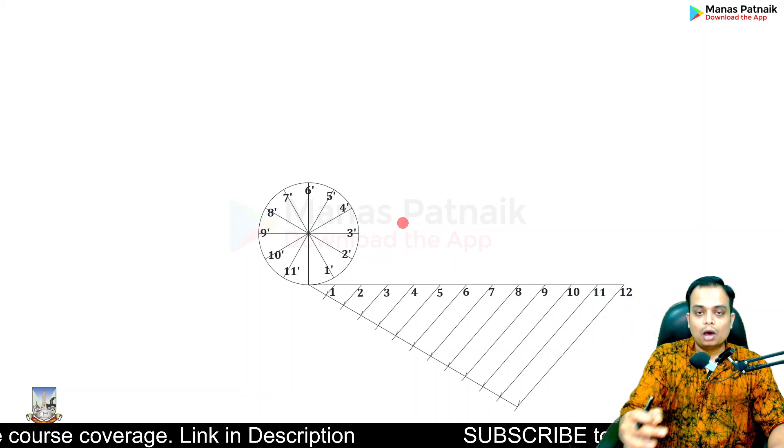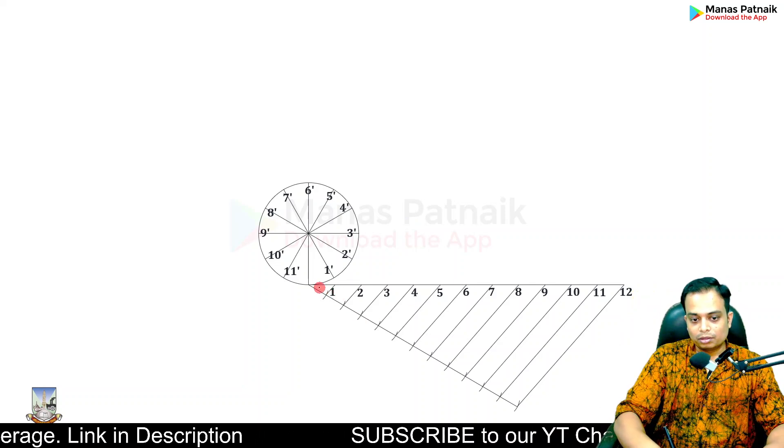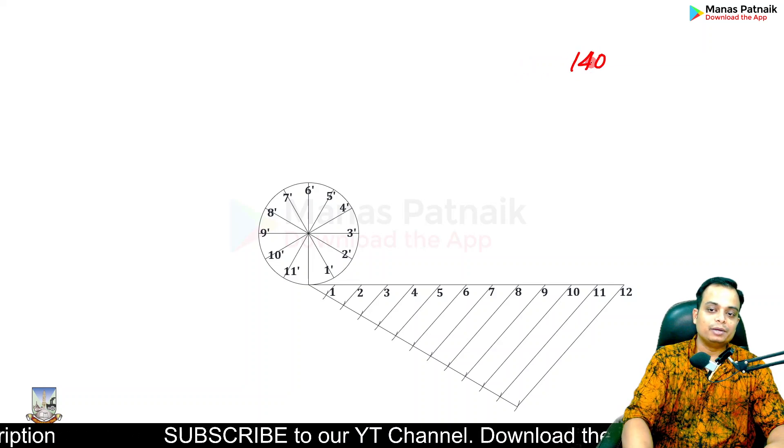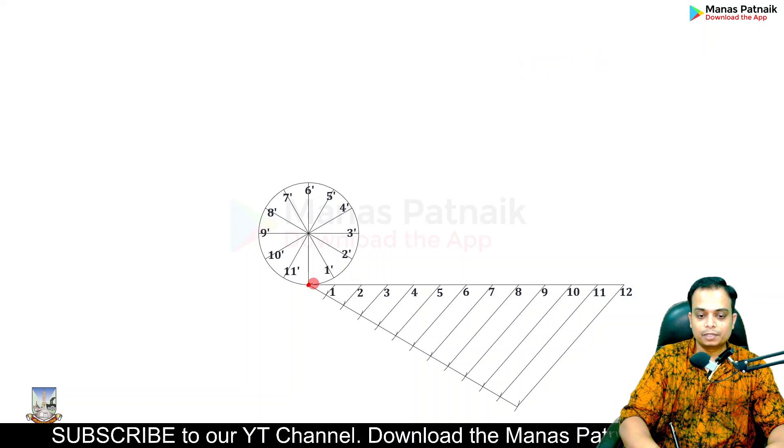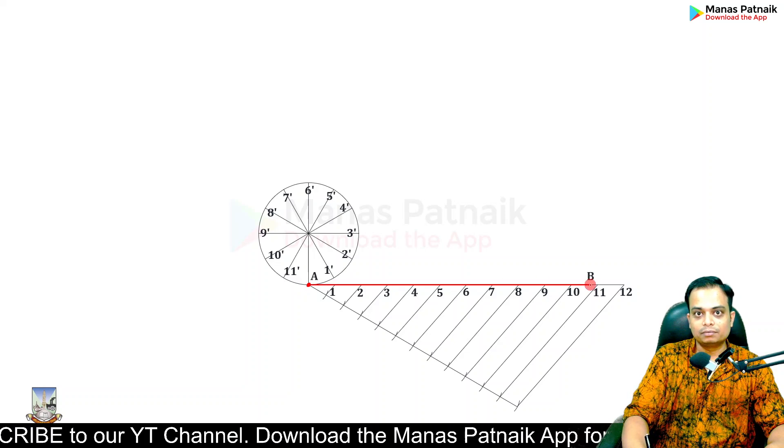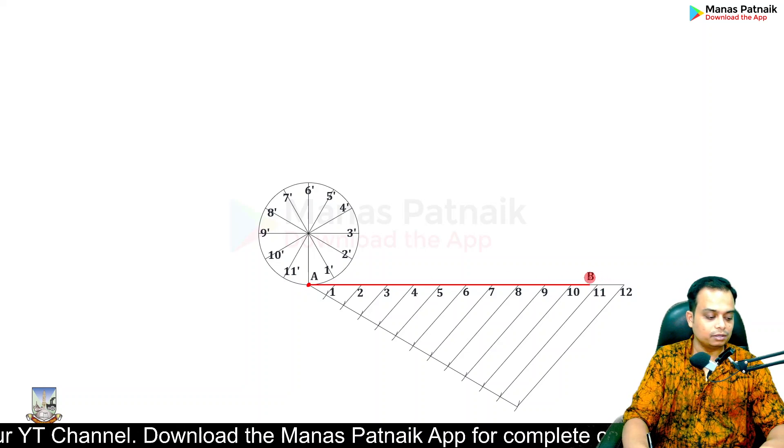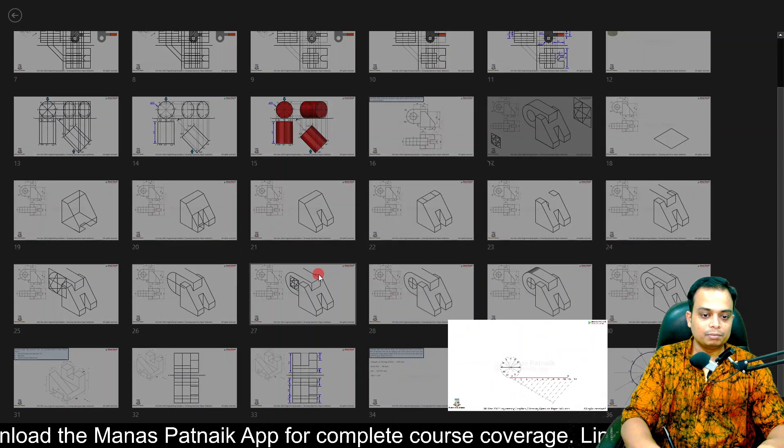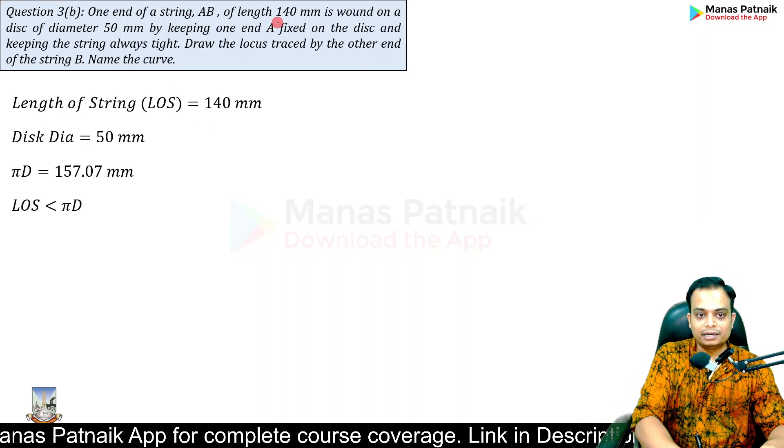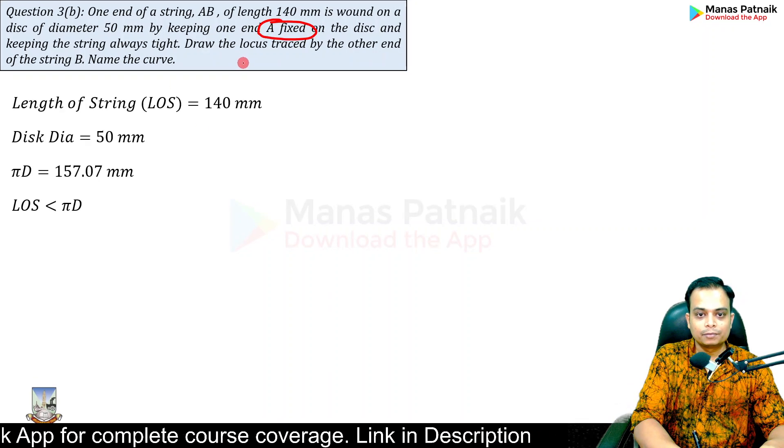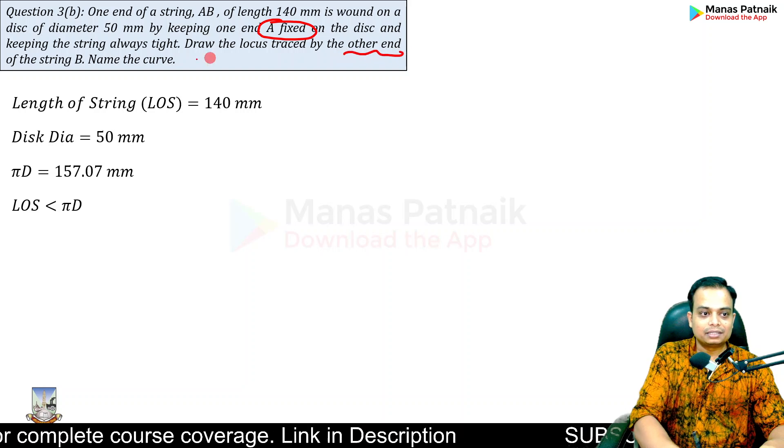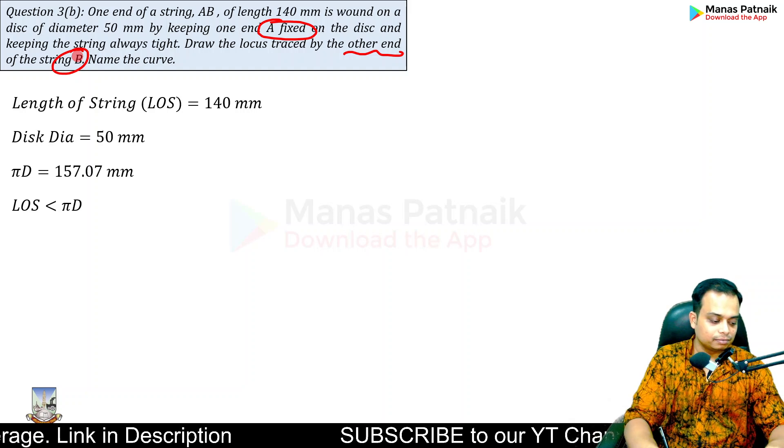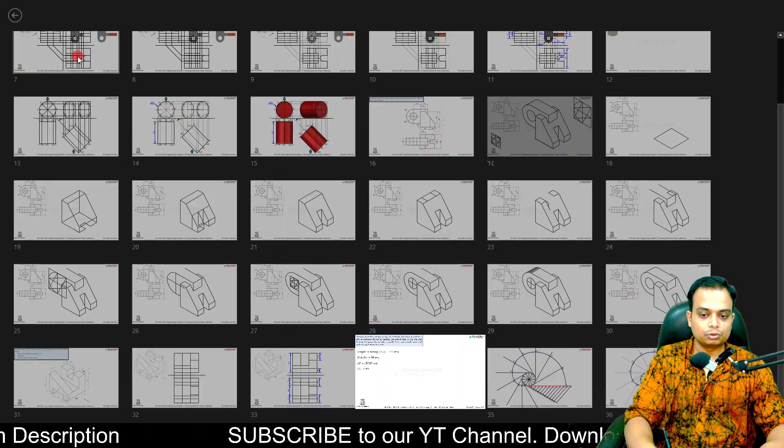Now we are going to put our string along this line. The string length is 140 millimeters. Starting from this point, mark 140. As written in the problem, end A has to be fixed on the disk while the other end you'll hold and keep on winding the string until the process finishes.